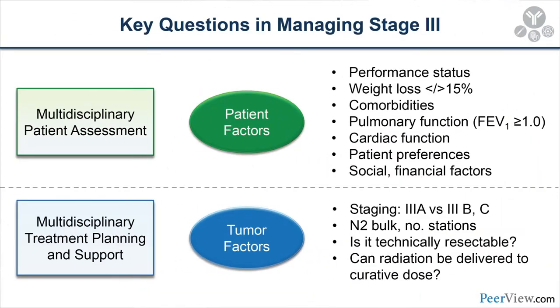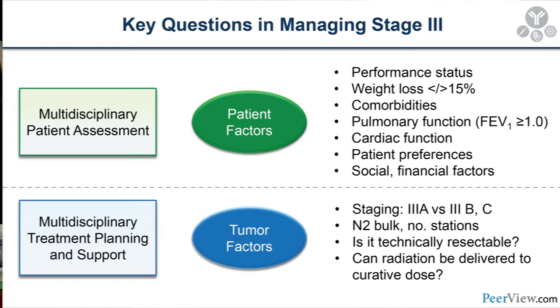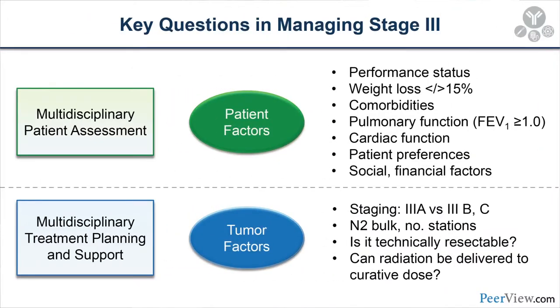There are several key questions when managing stage 3 patients — and even stage 2 and stage 1b patients. I think about these as related to two separate aspects: patient factors and tumor factors. These patients invoke some of the liveliest debate at tumor boards. Patient factors include performance status, weight loss, general comorbidities — particularly pulmonary function, but also cardiac function — and increasingly, patient preferences, social and financial factors.